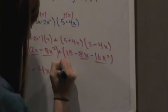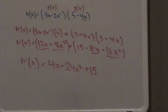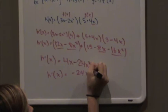And then, there's no like term over here to combine with 15, so it's just 15. And then, it might look better if you put it in order of degree. So, you get negative 24x squared plus 4x plus 15.